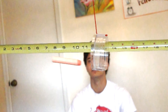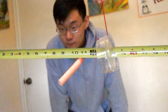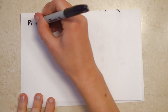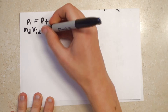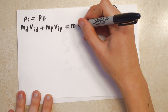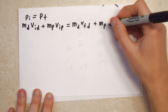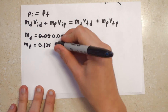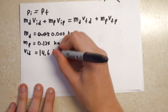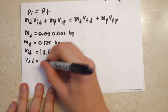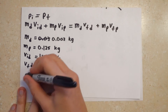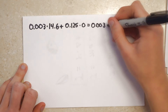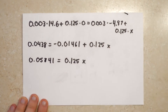In this example we shot a dart which hit a pendulum, and through the equations we will explain how we calculated the final velocity of the pendulum. The equation is P initial equals P final: the mass of the dart times the initial velocity of the dart plus the mass of the pendulum times its initial velocity equals the mass of the dart times its final velocity plus the mass of the pendulum times its final velocity. The mass of the dart is 0.003 kg, the mass of the pendulum is 0.125 kg, the initial velocity of the dart is 14.6 m/s, and the final velocity of the dart is -4.87 m/s. The initial velocity of the pendulum is 0, and solving for x, the final velocity of the pendulum is 0.46728 meters per second.